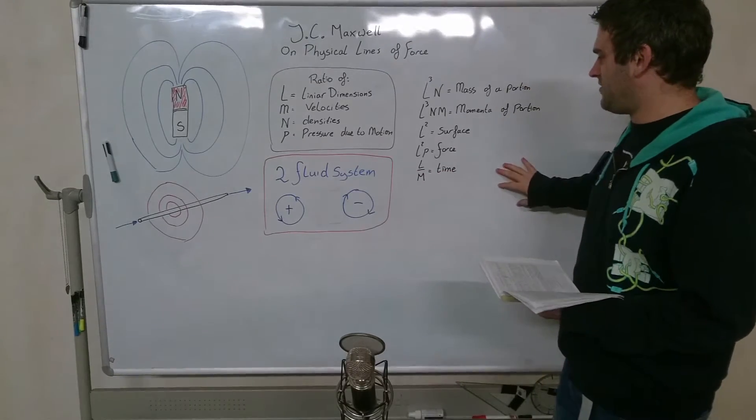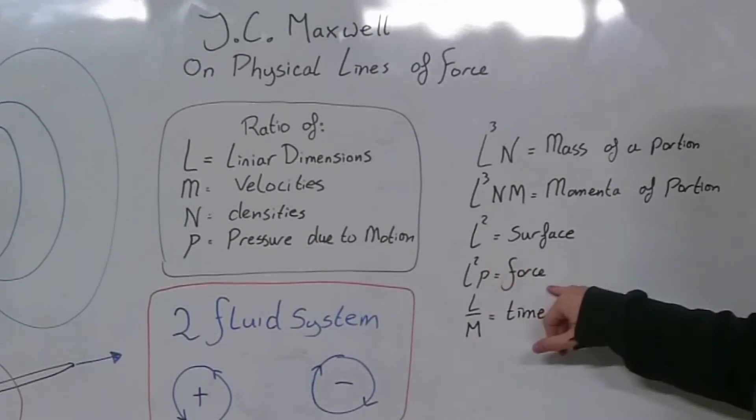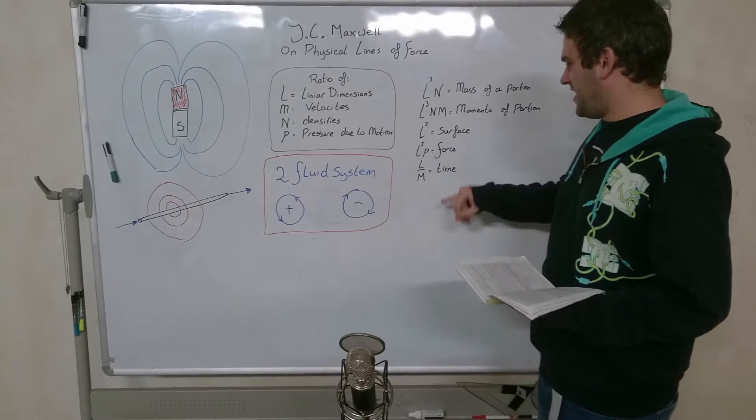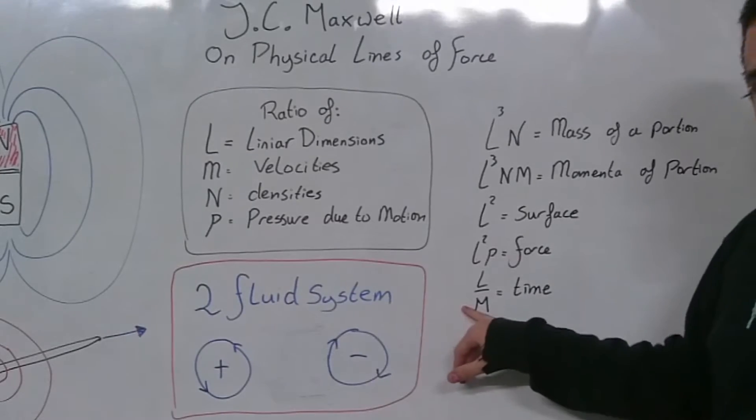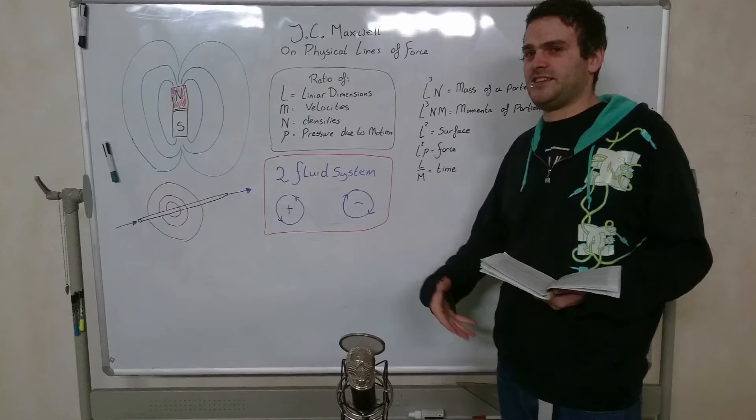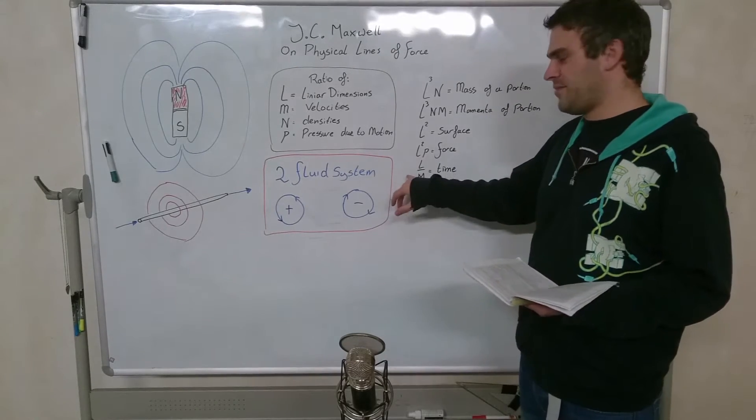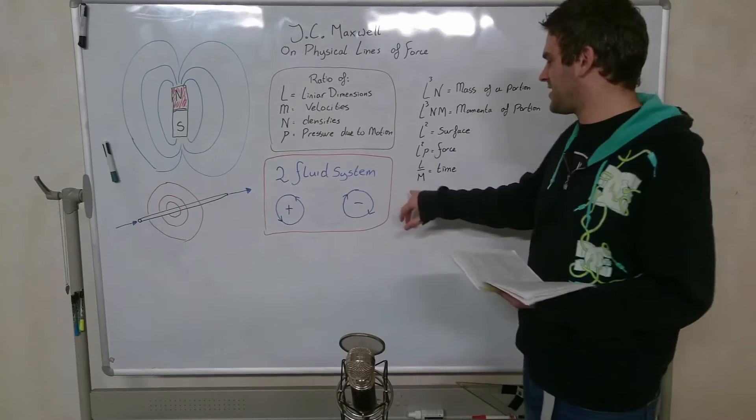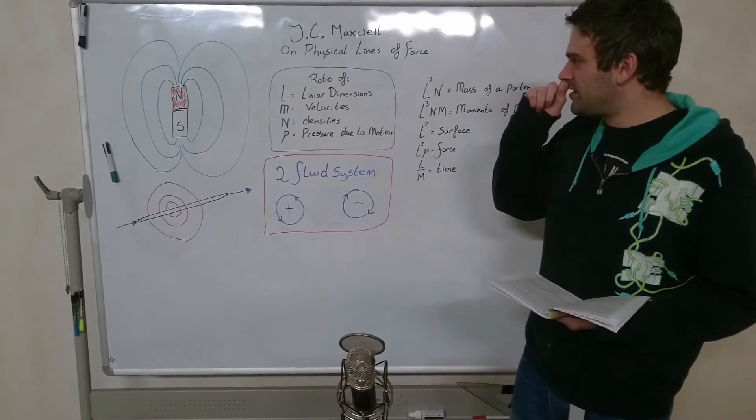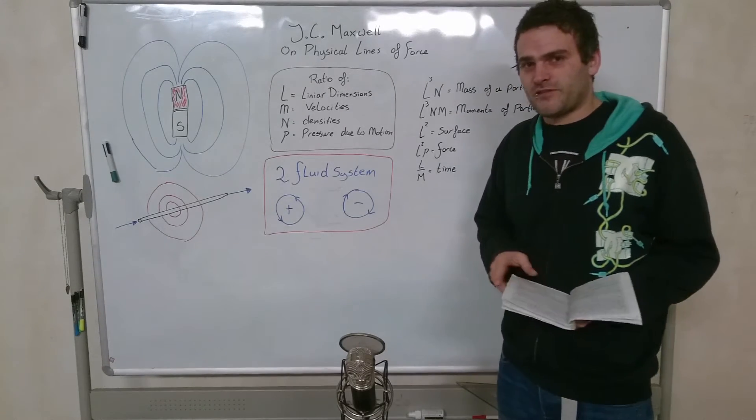If we would have a force, that would be, for instance, a surface times the pressure due to motion. That would give us a force. And if we have a linear dimension and we divide it by the velocity, we would call that time because velocity is in distance over time. So if we have a distance and we divide it by distance over time, that gives us just time. So these are the basic ideas, the fundamental ideas of the incompressible superfluid ether.